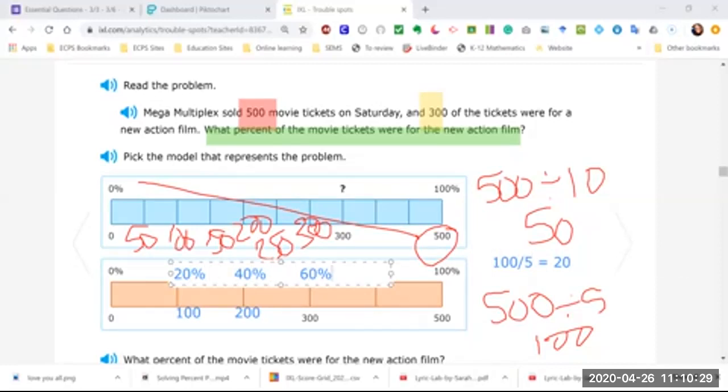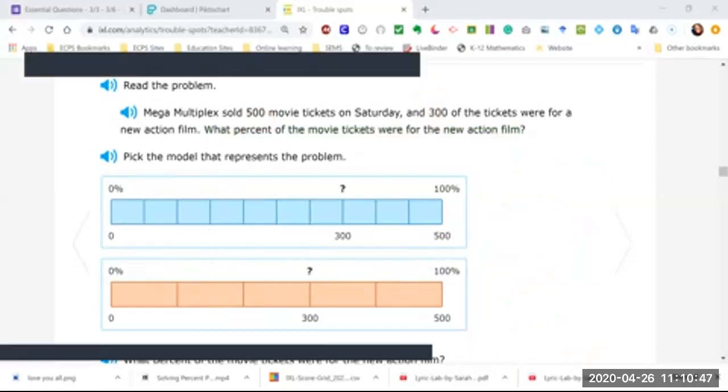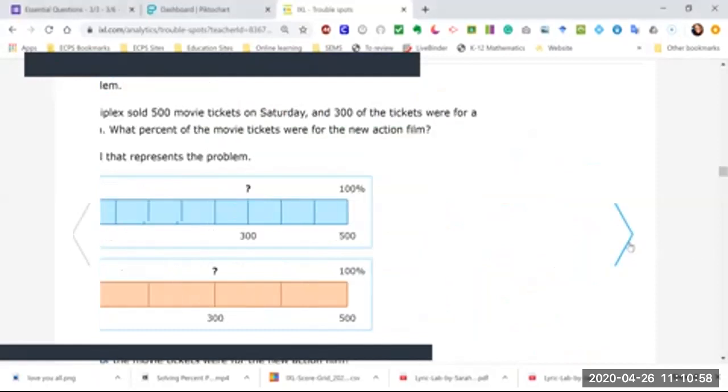So when it asks what percent of movie tickets are in the new action film, you are going to put a 60 in the blank. All right, let's take a look at another one. We'll do one more example.